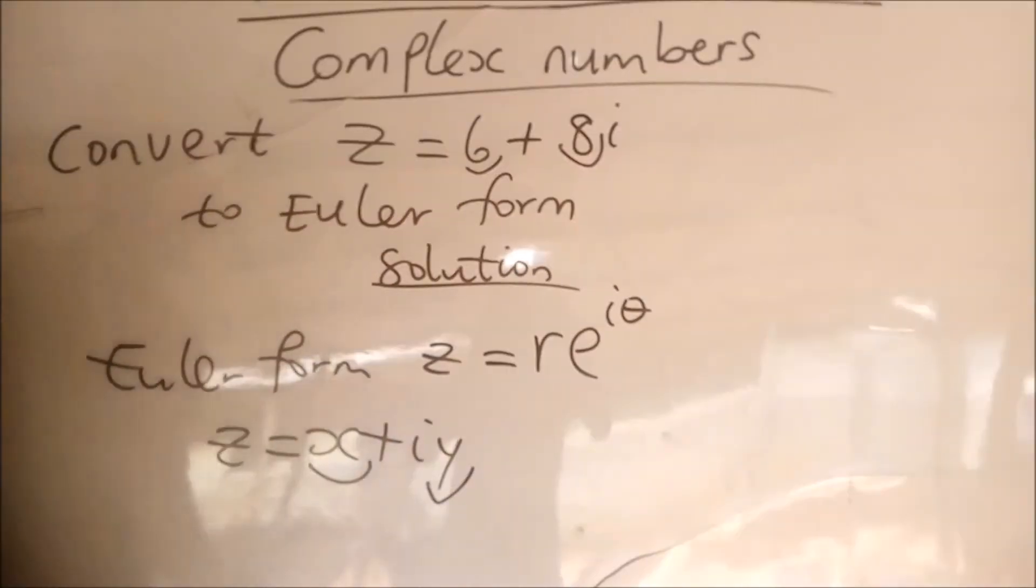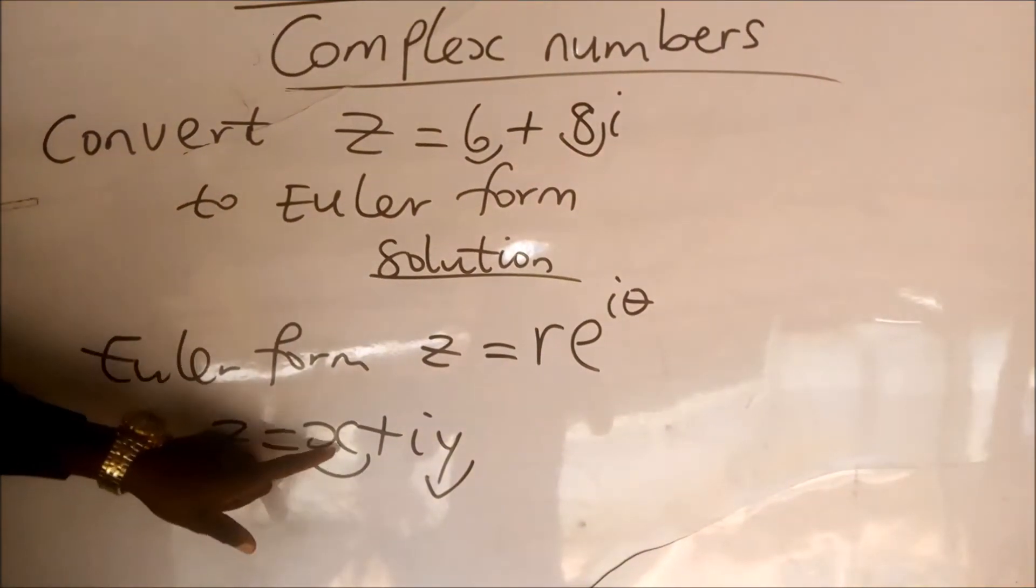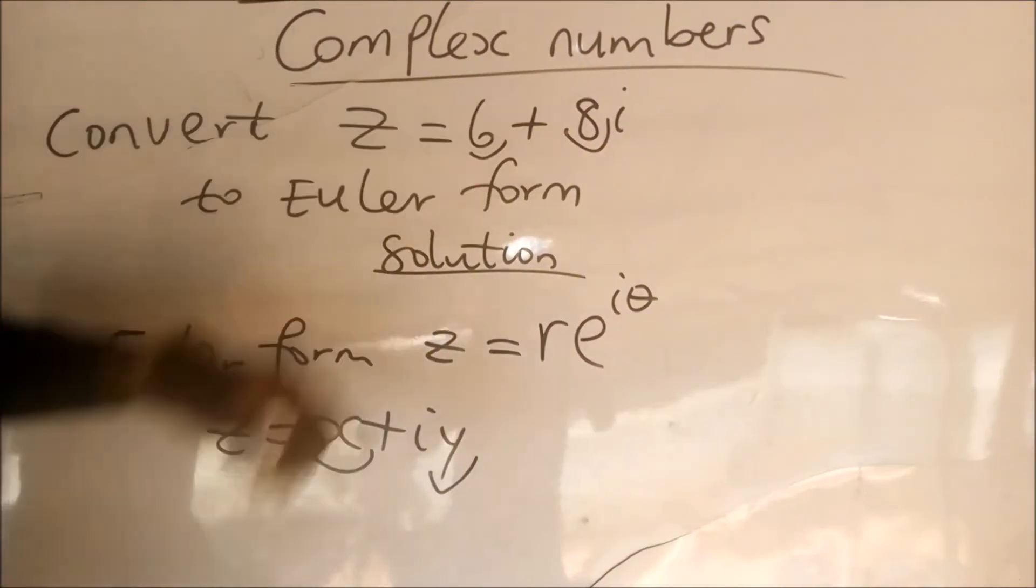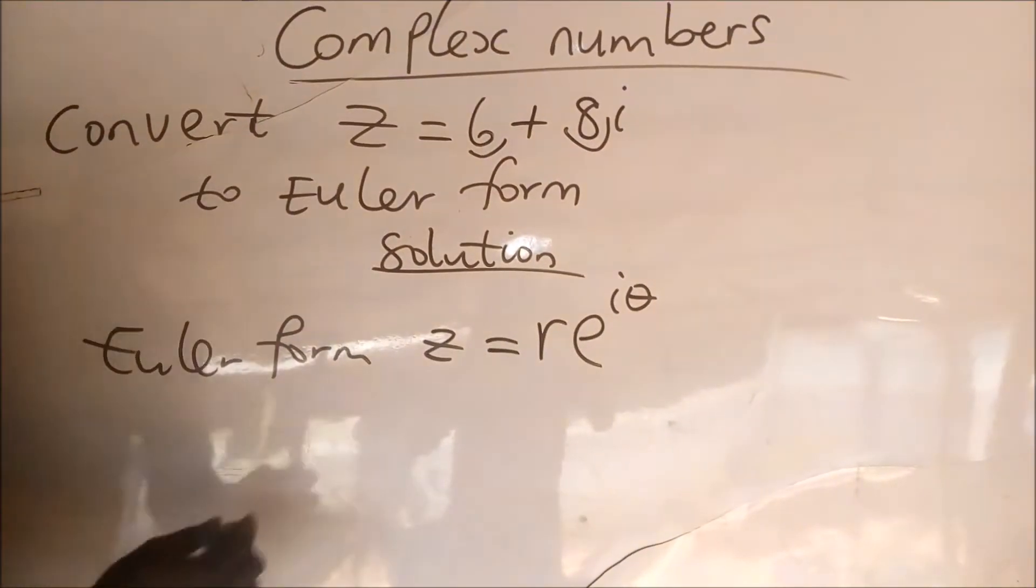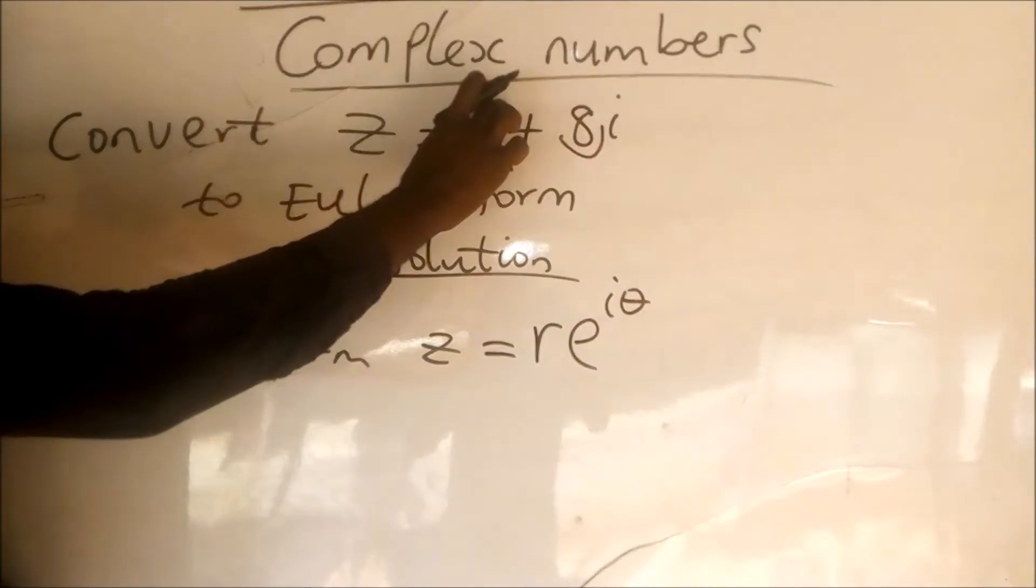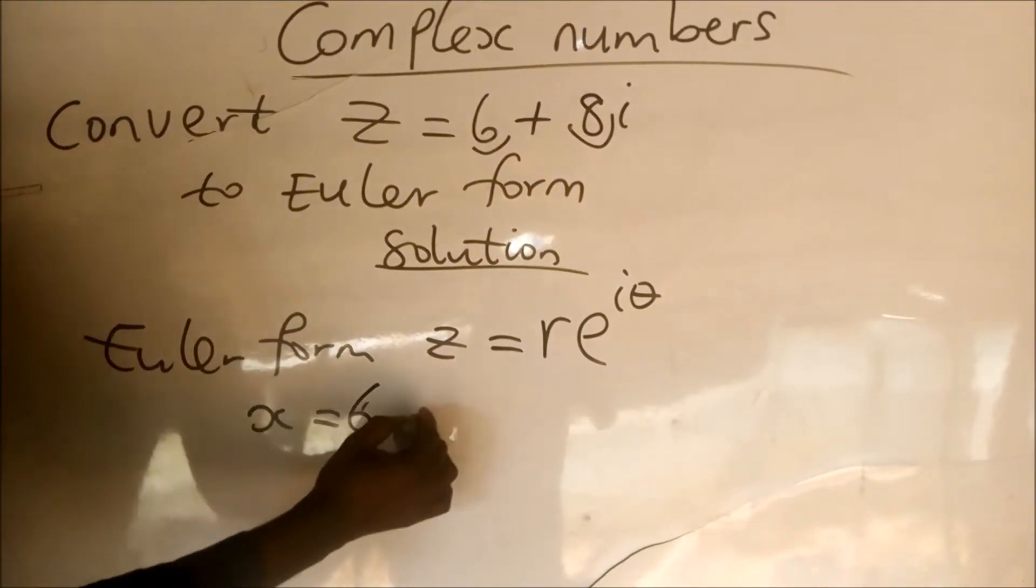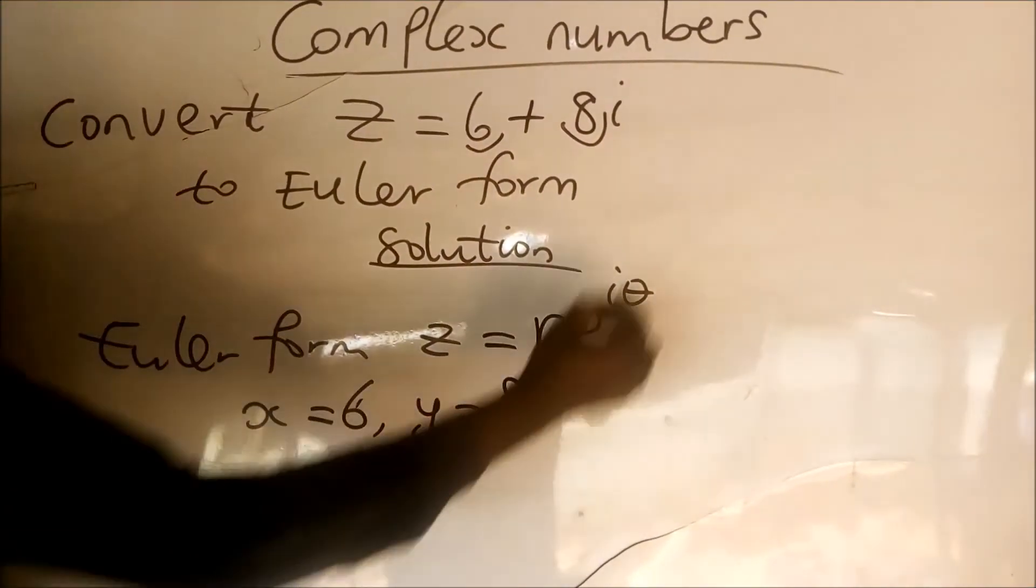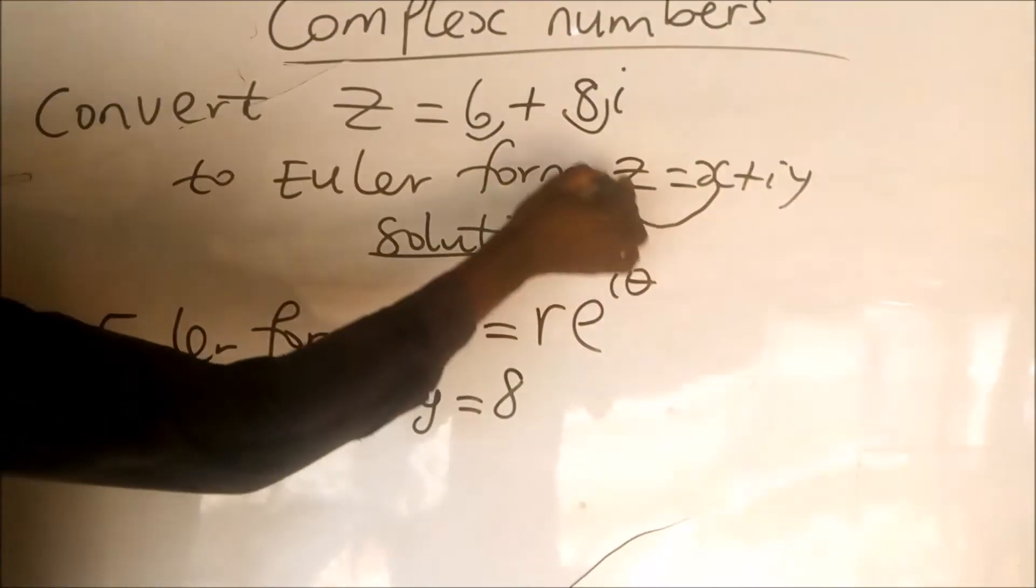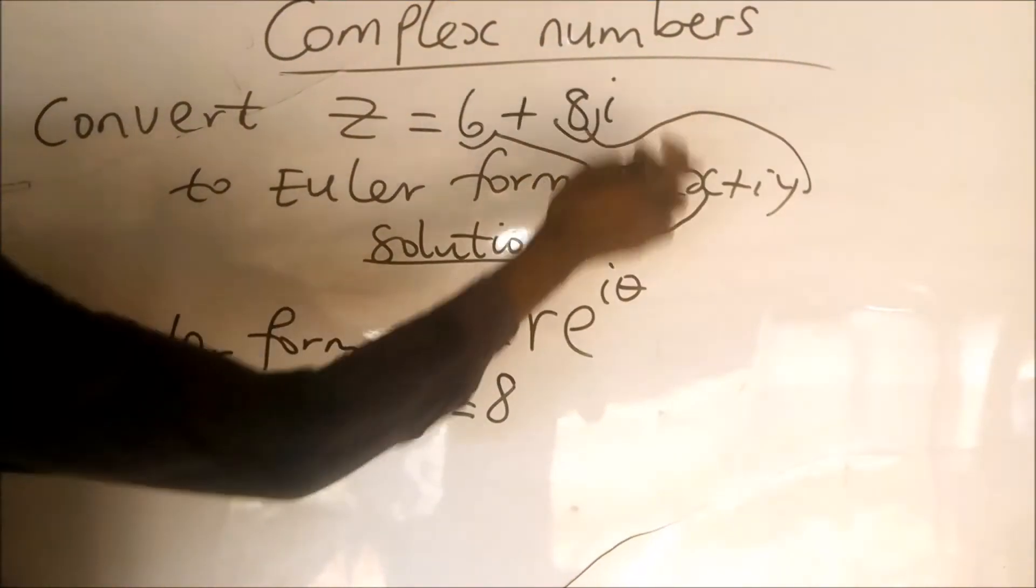We are going to make use of the real part and the imaginary part of this complex number. When we compare the general form to the given complex number, we have that x is equal to 6 and y is equal to 8. That is z equal to x plus i y, so y is 8 and x is 6.